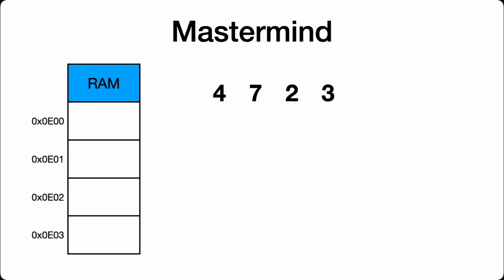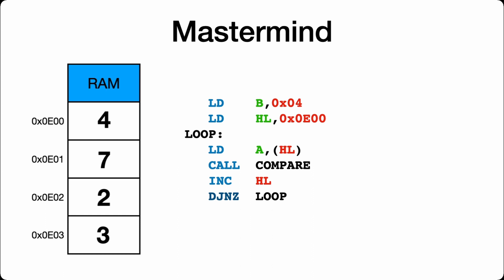If you did have RAM this would be pretty straightforward to program. You'd place the number, say 4723, in memory somewhere — I just chose 0E00 — and use a routine that loops through the four bytes in memory and compares each value to the answer. But I can't use RAM.